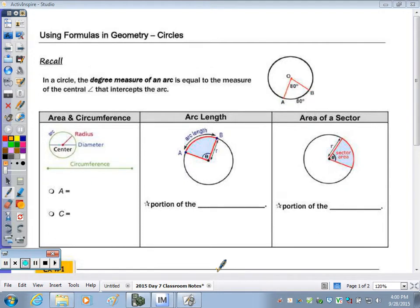For today's notes, we continue using formulas in geometry. Last class, we looked at the area of a regular polygon, and today we're going to look at the area and circumference of circles, but we're not going to look at the whole area of a circle or the whole circumference. We're going to look at parts of the circumference and parts of the area.